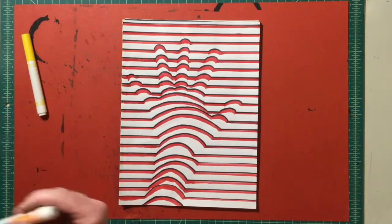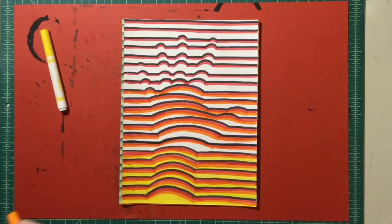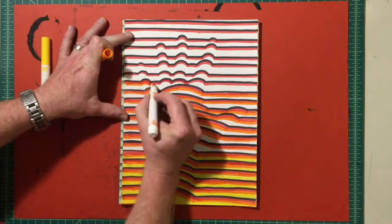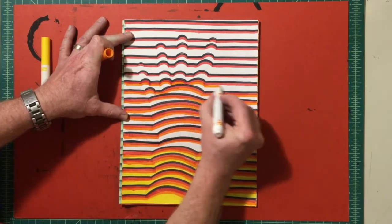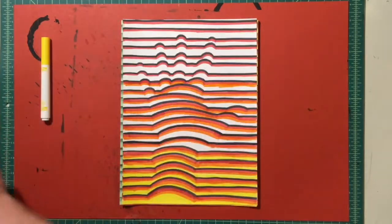And then take your next color and repeat the process, tracing again underneath each one of those lines until you've filled the page with that second color. You can see how I'm doing it here.